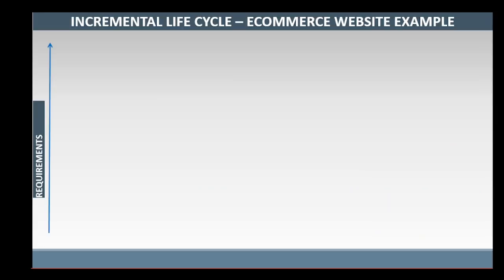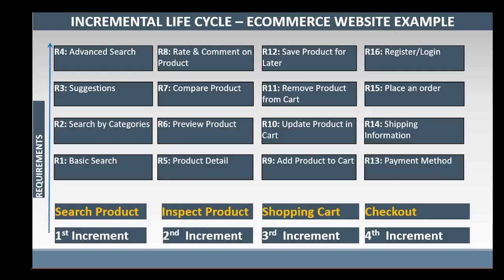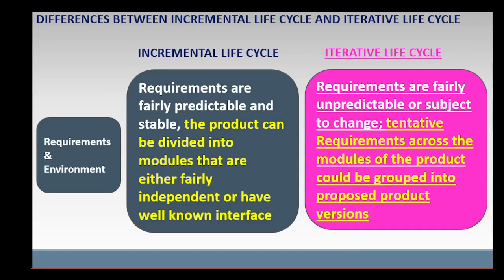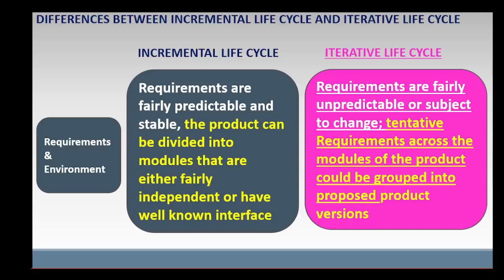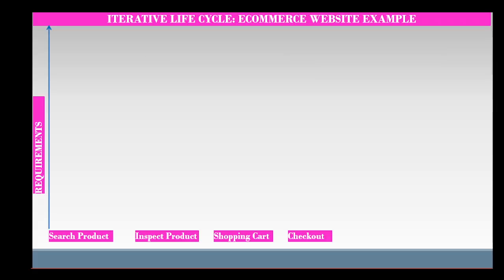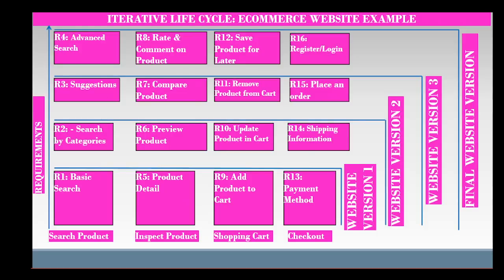E-commerce website development can be divided into increments such as search product, inspect product, shopping cart, and checkout. In iterative project life cycle, the environment and the requirements may be fairly unpredictable or subject to change. Tentative requirements across the modules of the product could be grouped into proposed product versions. For example, e-commerce website development can be carried out in product versions such as website version 1, website version 2, website version 3, and website version 4.